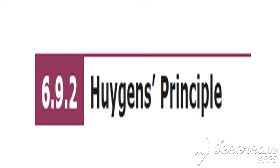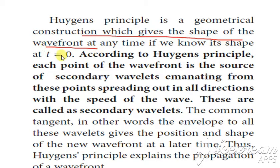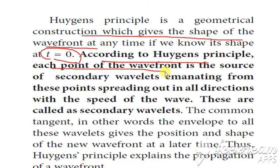Next we are going to see Huygens' principle. Huygens' principle is a geometrical construction which gives the shape of the wavefront even at time t equal to 0. According to Huygens' principle, each point on the wavefront is a source of secondary wavelet.